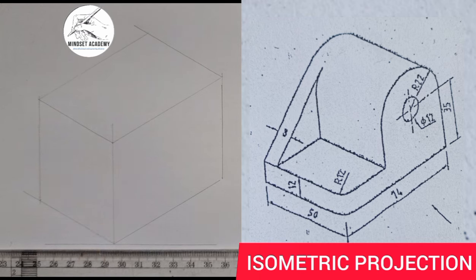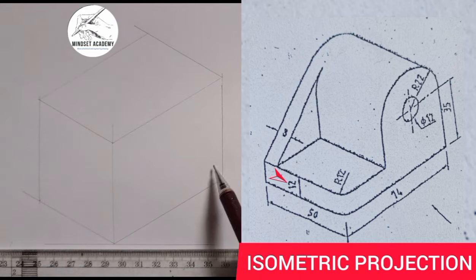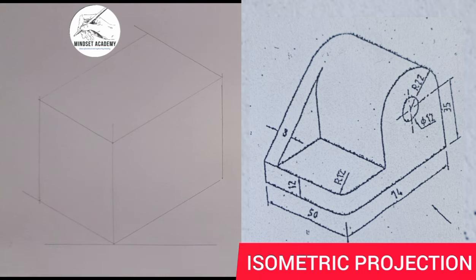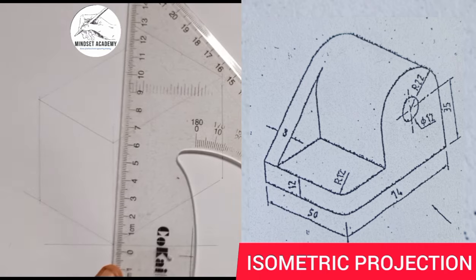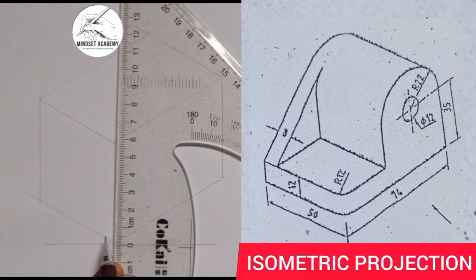The next thing is to start from the back. The thickness you can see from here to here is 12, so I just need to get one part of it and measure 12 from here — from 0: 10, 11, 12 here.